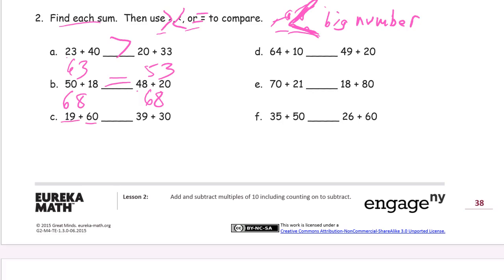19 and 60, well that's 1 more ten and 9 ones, so it's 79. And this is 3 more tens, so it's 69, and 79 is greater. 1 more ten for 64 is 74, and then now 2 more tens for 49 is 69, and 74 is greater. 21 and 7 more tens is 91. And 18 and 8 more tens is 98. 91 is less than 98. 35 and 5 more tens is 85. And 26 and 6 more tens is 86, and 85 is less than 86.